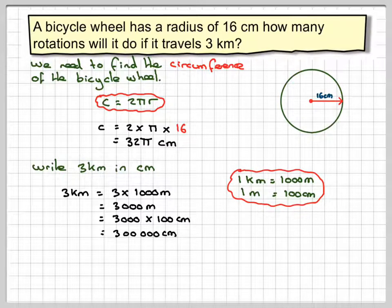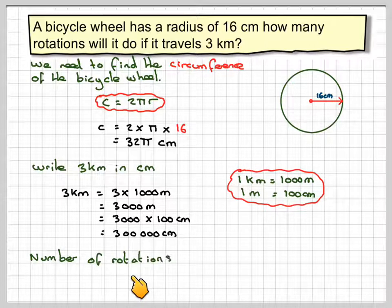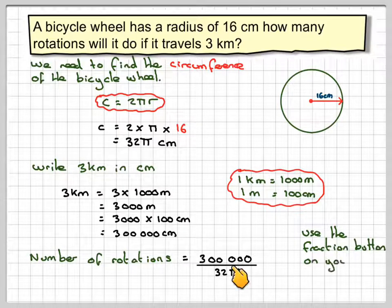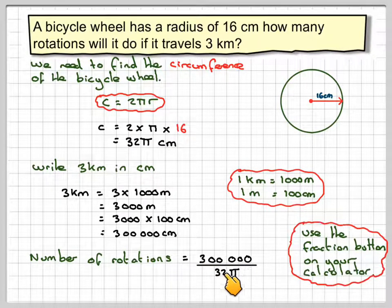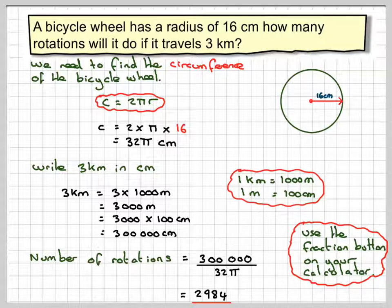The number of revolutions will be the distance travelled divided by the circumference, because each rotation covers that amount of distance. So, the number of revolutions is 300,000 divided by 32π. Use the fraction button on your calculator — put 300,000 at the top and 32π on the bottom, press equals, and you get an answer of 2,984 rotations. The bicycle wheel will go around 2,984 times if the bicycle travels 3 kilometres.